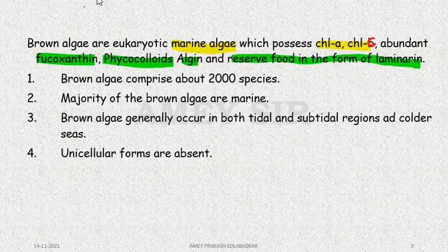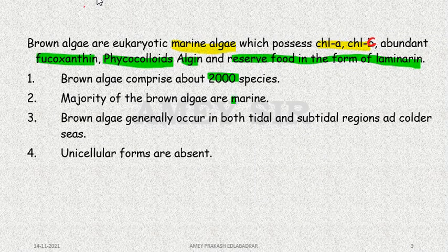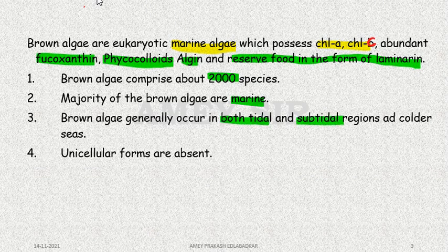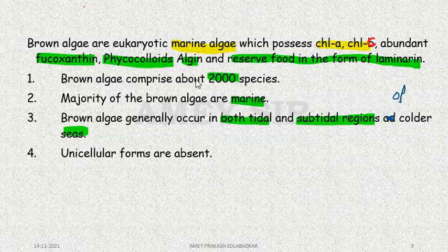Almost 2000 species are found in Brown Algae, and the majority of them are Marine in their habitat. Unlike Red Algae, which are found in warmer seas at greater depths, Brown Algae are found in the tidal or subtidal regions of Colder Seas.